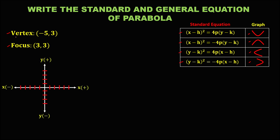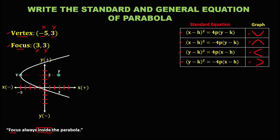From the given coordinates for the vertex, x is negative 5 and y is positive 3. Connect — this is now the point of the vertex. From the focus, x is positive 3 and y is also positive 3. Connect — this is now the point of the focus. Take note that in a parabola, the focus is always inside the parabola. Therefore, this parabola opens to the right.